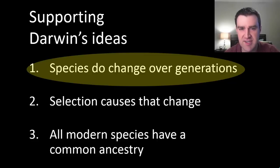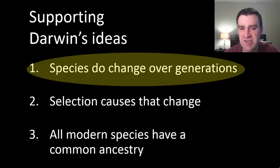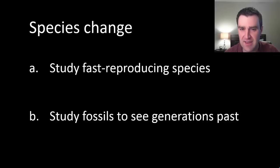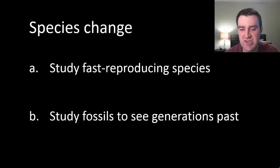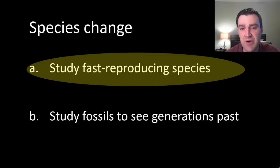This isn't immediately obvious. It doesn't seem to us that the species around us are changing, and that's because most species have such a long generation time that we can't really see hundreds of generations in our own human lifespan. There are two strategies for showing that species actually change — studying fast-reproducing species, or going to the fossil record.